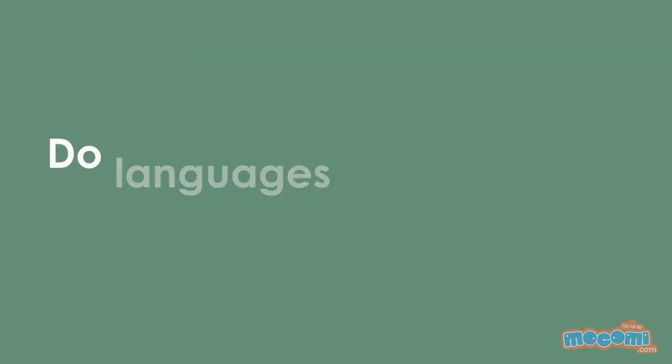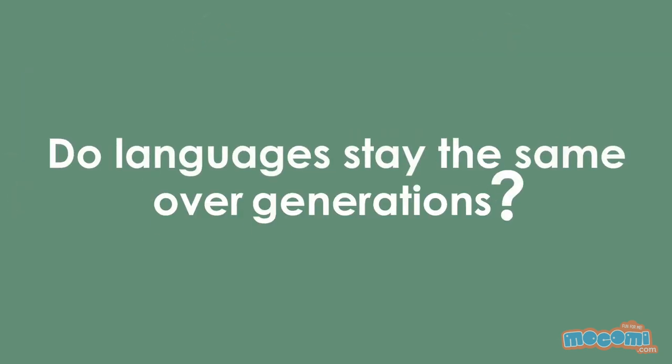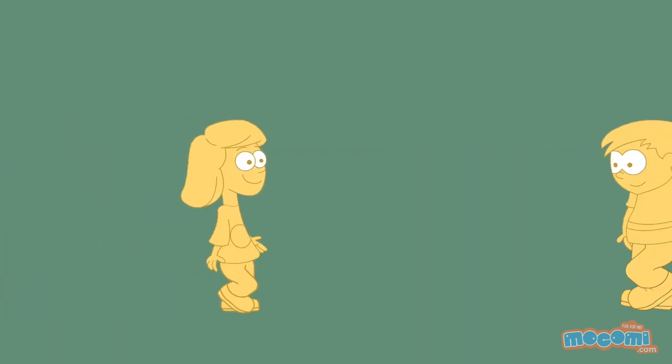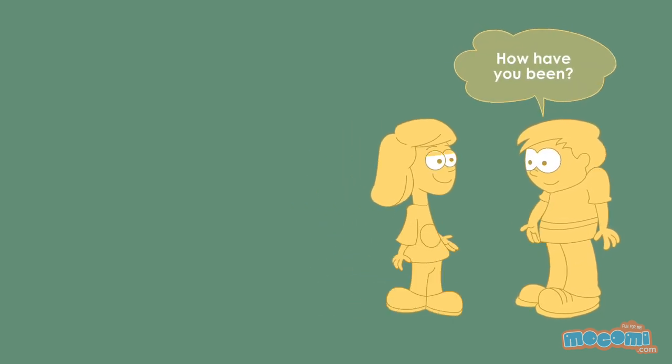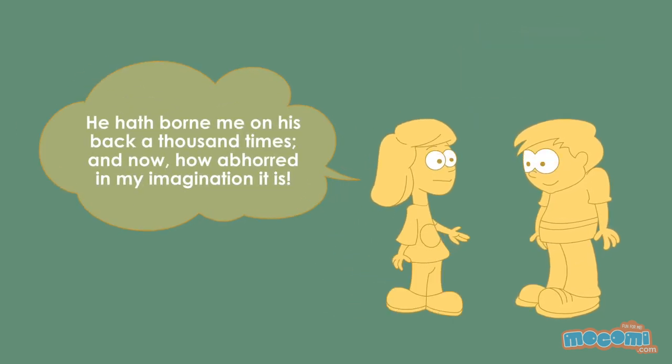So, do languages stay the same over the generations? Languages change as they are handed down from generation to generation due to change in culture and influence of other languages. That is why the English spoken in the Elizabethan era is way different from the English we speak today.